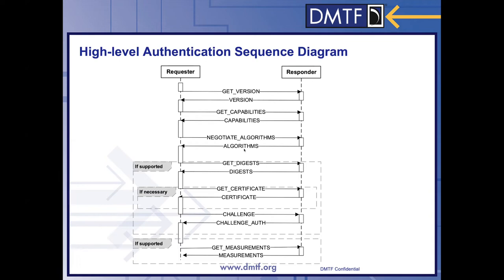The requester may issue get digest, and the responder responds with digest. This request and response provides hashes of each certificate chain to help the requester identify a potentially cached certificate chain. If the requester does not have the certificate chain already, the requester issues get certificate requests to retrieve the actual certificate chain from the responder in the certificate response.